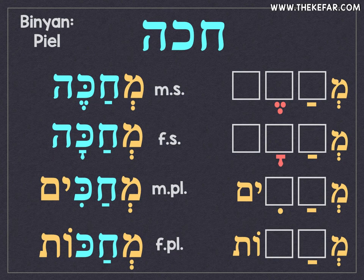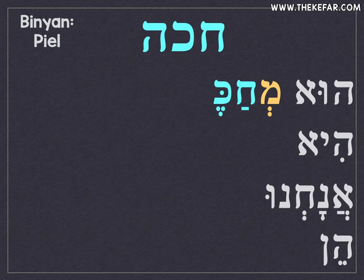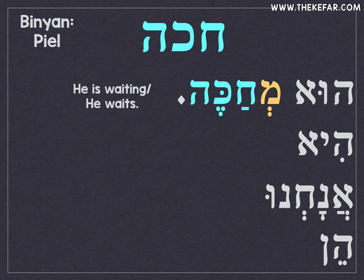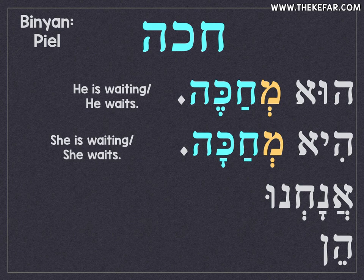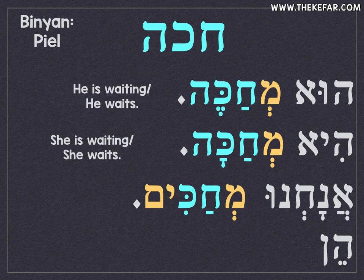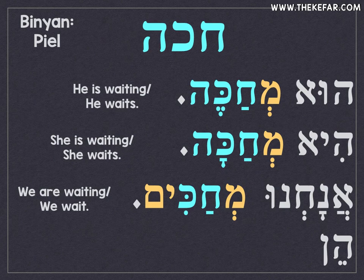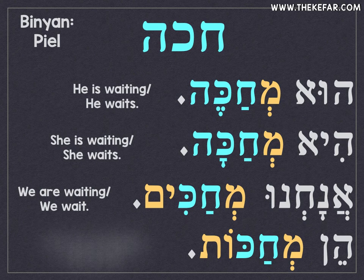Now let's do it with pronouns. M'Chakeh — he is waiting, or he waits. M'Chaka — she is waiting, or she waits. A female would say M'Chaka, I'm waiting; a male would say M'Chakeh, I am waiting. M'Chakim — we are waiting, masculine plural, either a mixed group or a group of males. M'Chakot — they are waiting, feminine plural.